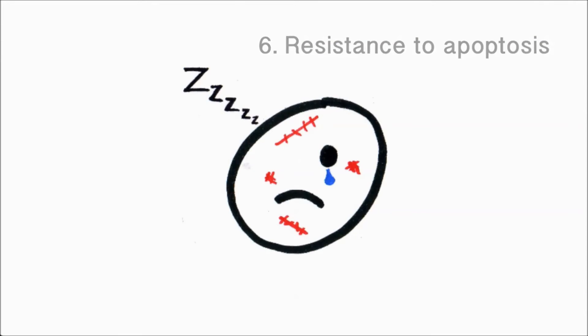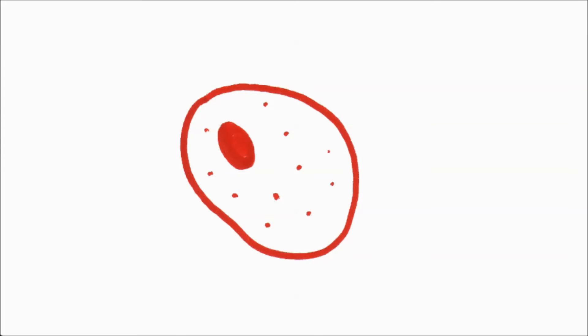Number six, when cells become damaged or worn out, they are programmed to die and be replaced. Cancer cells are able to avoid this process of being destroyed by the body, which is known as apoptosis, so they multiply out of control.